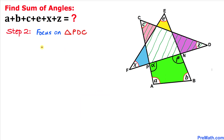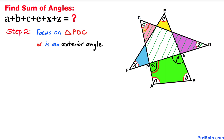Now let's focus on triangle PDC. We can see that angle alpha is an exterior angle for this triangle. Therefore, this exterior angle alpha is going to be equal to the sum of the two opposite interior angles, c and z. So we can write: angle alpha = c + z. Let's call this equation number one.